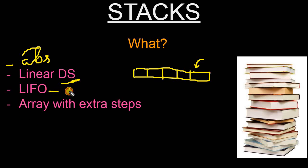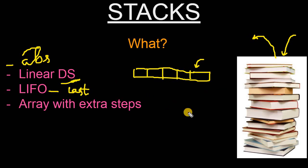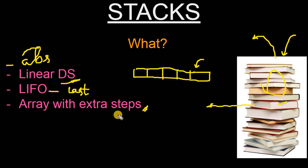If anyone does not know, LIFO means Last In First Out. Let's take the basic example of a stack of books. The value which was placed last will be taken out first. So let's say you have to access a particular book at the bottom — you have to remove all the books above it first, and only then can you access that book. Also, stack is basically an array with extra steps. We will see how you can implement a stack using an array with those basic steps.